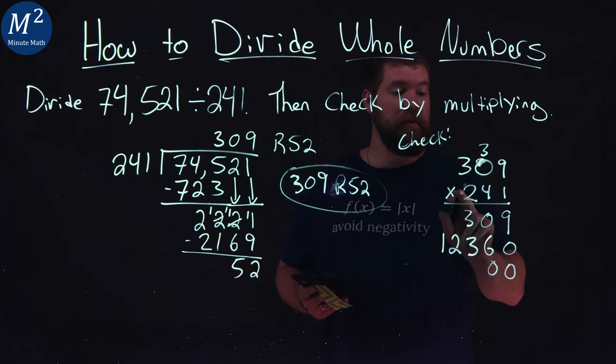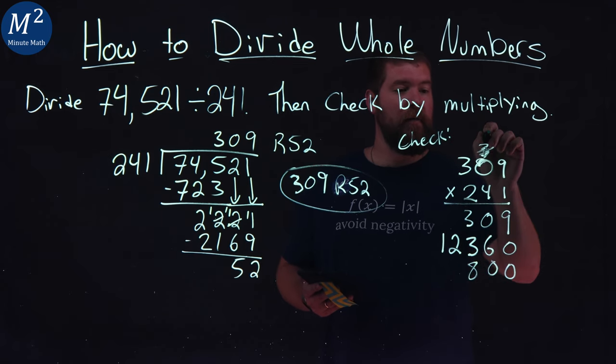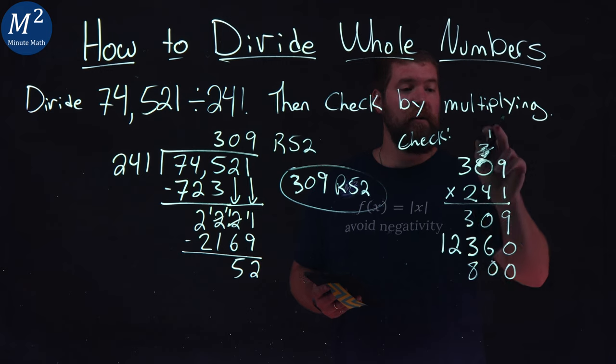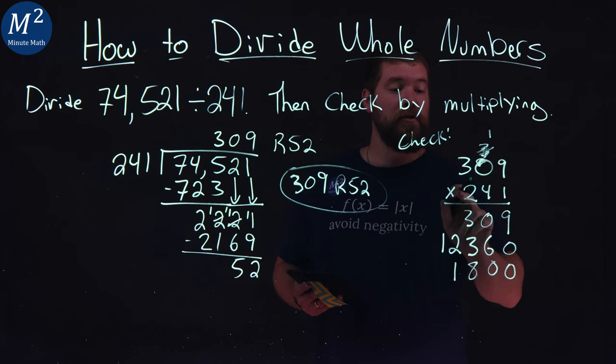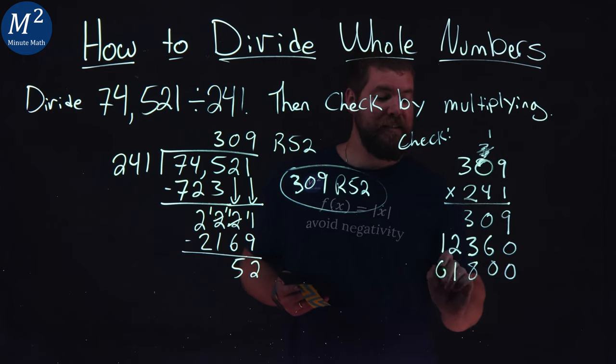Now, we're dealing with the 2s. 2 times 9 is 18. Cross that out and carry the 1. 2 times 0 is 0 plus 1 is 1. 2 times 3 is 6 right there.